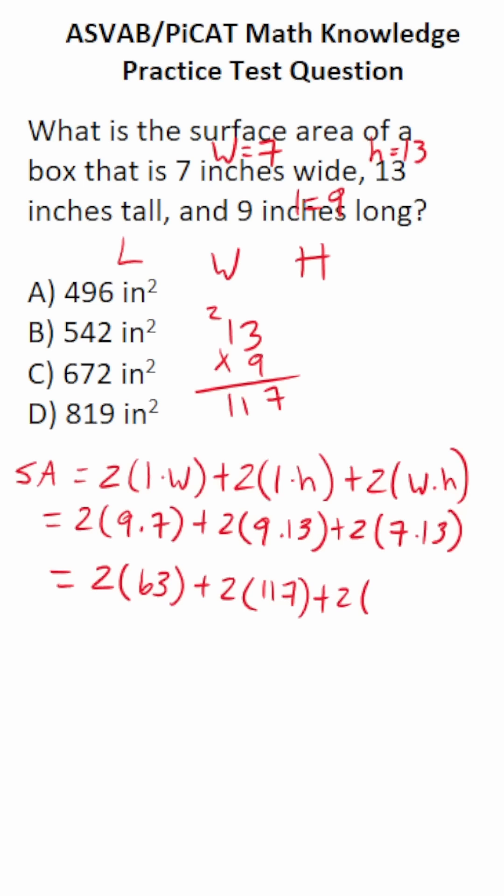Plus 2 times 7 times 13. Likewise, I'm going to do off to the side. 7 times 3 is 21, bring down a 1, carry a 2. 7, 8, 9. So this is 91.